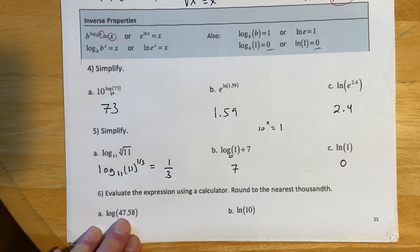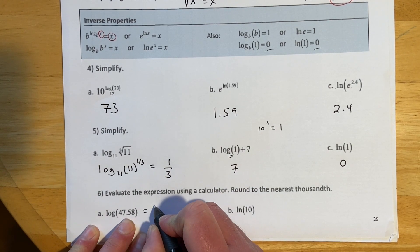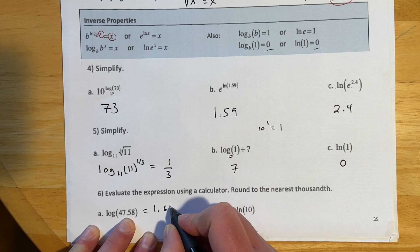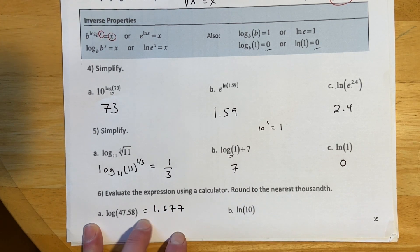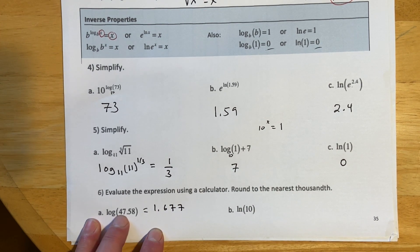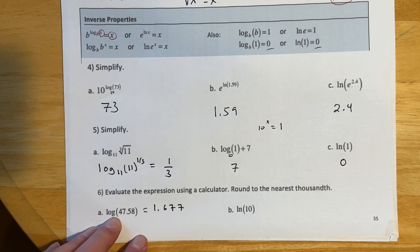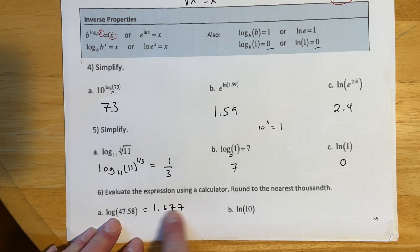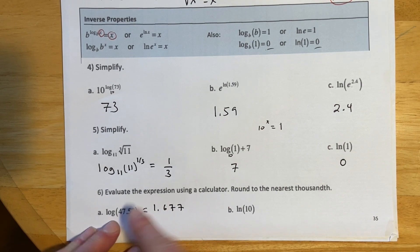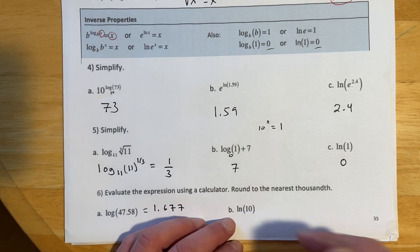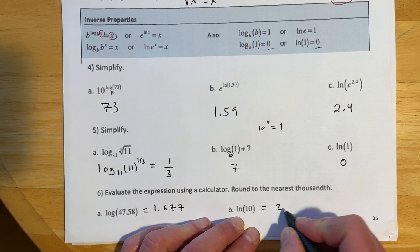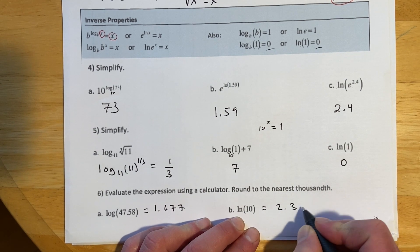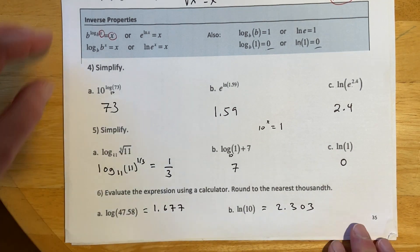For log(47), that's base 10. To three decimal places I got 1.677, which makes sense: 10^1 = 10 and 10^2 = 100, so the answer should be between 1 and 2 — exactly what we got. For natural log of 10, find the ln button; you should get approximately 2.303.